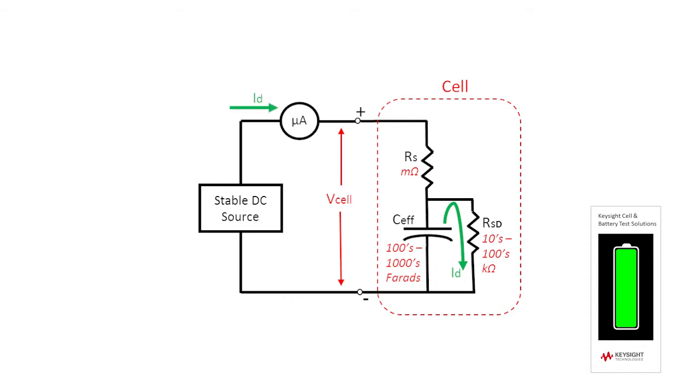The potentiostatic method also uses a microammeter to measure the small amount of current flowing from the DC source to keep the cell voltage constant. As long as the cell's voltage is constant, the current flowing from the DC source into the cell is equal to the cell's self-discharge current, I-sub-D, flowing through R-sub-SD.